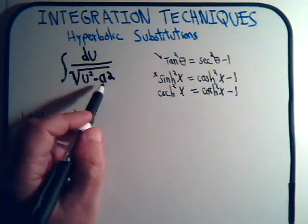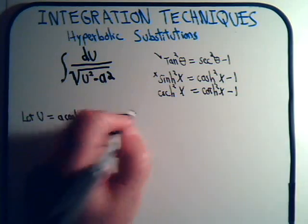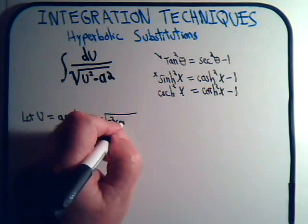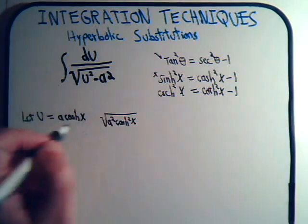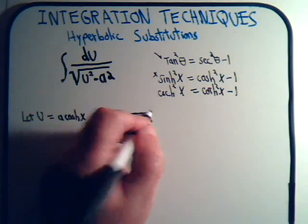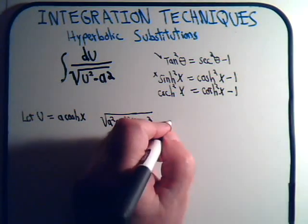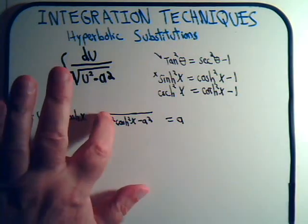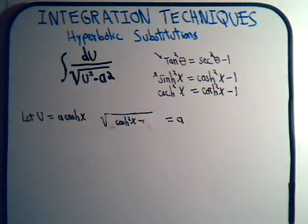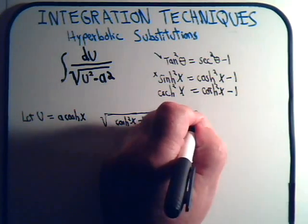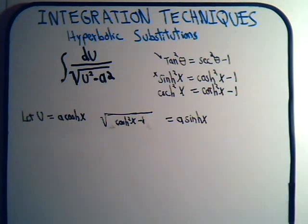When we do that, under the square root sign we get the square root of u squared minus a squared. We can factor out the a squared and take it outside, giving us a times the square root of hyperbolic cosine squared minus 1. That's the hyperbolic sine squared, so taking the square root gives us a times the hyperbolic sine of x.